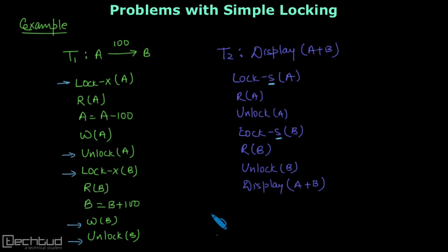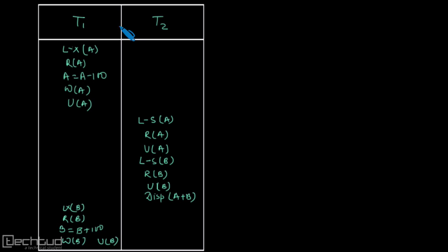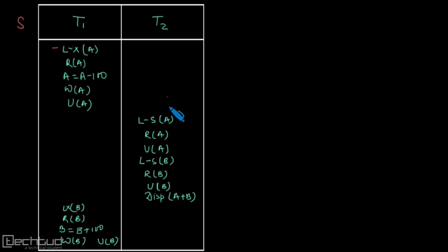Using transactions T1 and T2, I'll create a schedule S. Transaction T1 first performs an exclusive lock on A, then reads A, modifies the value, writes it back, and unlocks A. Meanwhile, transaction T2 is scheduled to execute — it performs a shared lock and reads A, then unlocks; then a shared lock on B, reads B, unlocks, and displays the value. Then T1 continues with B.